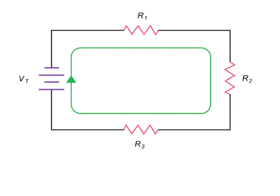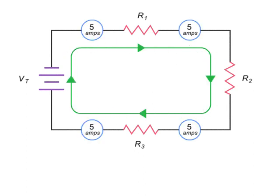For instance, if the source current in a series circuit is 5 amps, then no matter where along the circuit you take an ammeter reading, it will also register 5 amps.